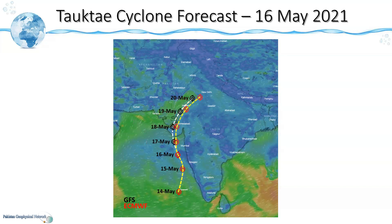So after two days, on 16th May, the ECMWF forecast has slightly changed while the GFS forecast track has come closer to the ECMWF track. As we can see, now both the models are forecasting that the cyclone will not pass near Karachi.